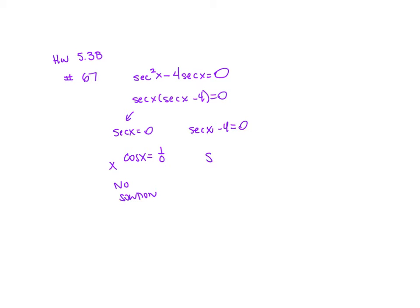If we're looking at secant of x minus 4, so secant of x equals positive 4, we can do the reciprocal. So cosine of x equals 1 over 4.